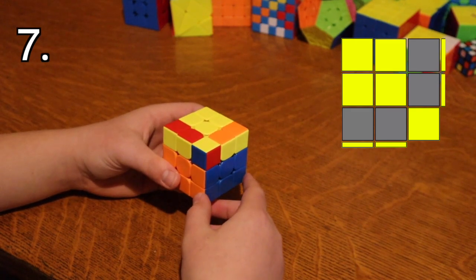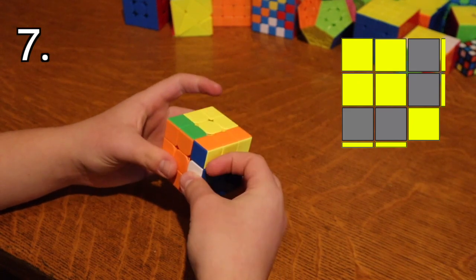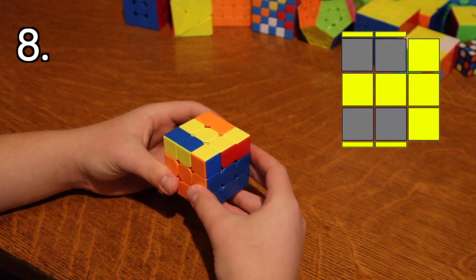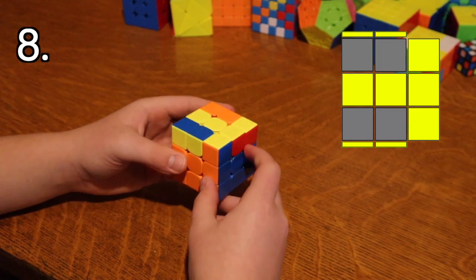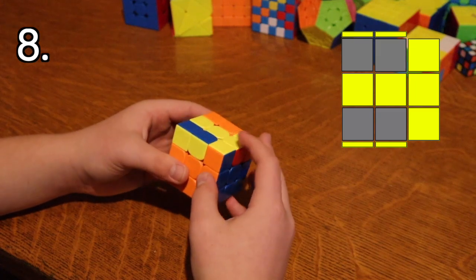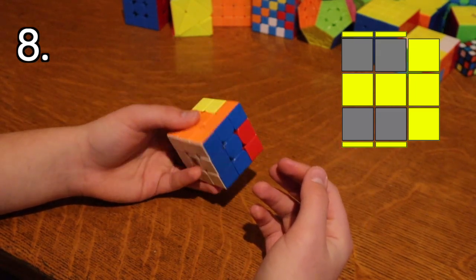And if you hold it this way and do just the first half, it solves it. And the second half is for the other T case like this, but where there's two bars pointing to the front and back. If you hold it like this and do the second half of a Y perm or the first half of a T perm, it's the same thing. It solves it.